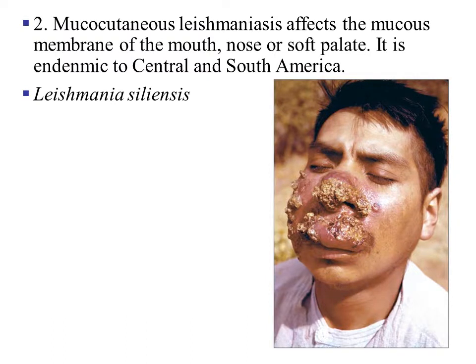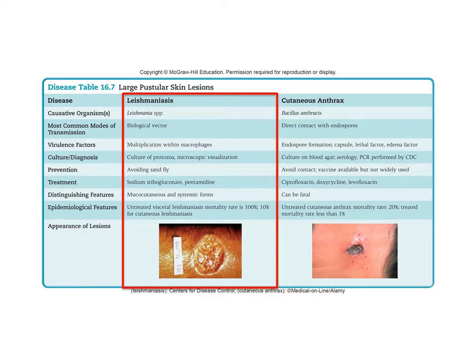The second type is caused by Leishmania braziliensis. This protozoa will cause mucocutaneous leishmaniasis, which affects the mucous membranes of the mouth, nose, or soft palate, and it is endemic to Central and South America. Table 16.7 summarizes leishmaniasis. In this slide you also see that you can get a skin infection from bacteria as well. The classical example is an infection of the skin caused by Bacillus anthracis.